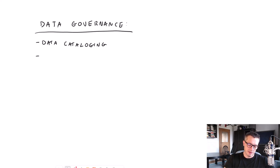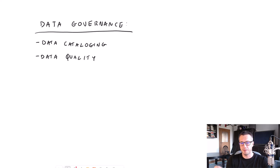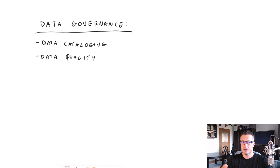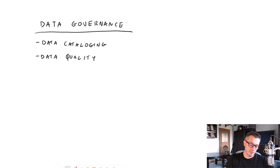Then we have data quality, and this is self-explanatory. The data we produce — we want to make sure its quality is good, because otherwise no one would use it. Secondly, if it is bad, then decision-making persons might take a wrong decision because the source data was simply wrong. As part of data governance, we want to make sure that the quality is good. That's the second pillar of data governance.